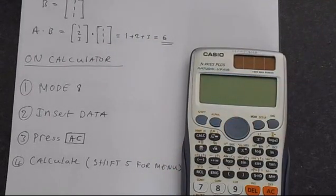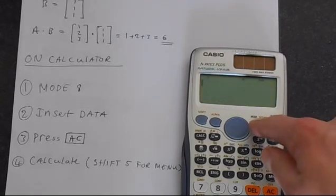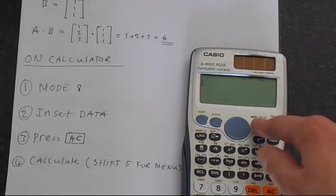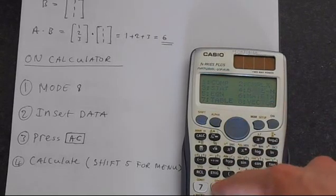First thing you need to do is get your calculator into the matrix mode. And this is mode 8 on the calculator. So just press mode followed by 8.